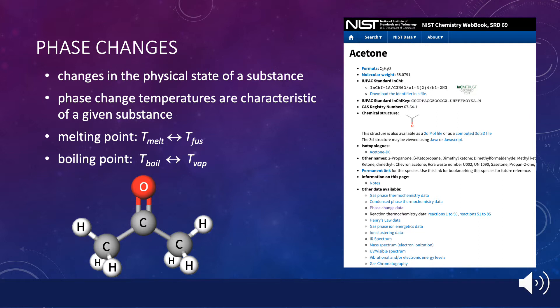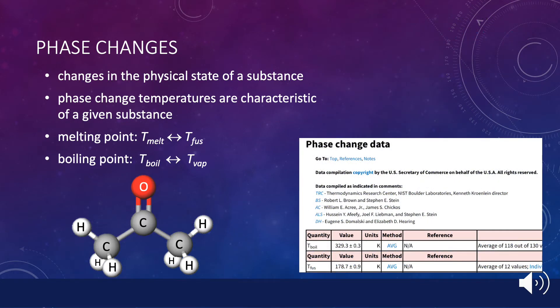For example, if one of your candidates for assignment is recorded as having a melting point at 330 Kelvin and you're told that your sample is actually a liquid at room temperature, which is 298 Kelvin, then you could safely eliminate that candidate from consideration. In the case of acetone, its melting point is 179 Kelvin and its boiling point is 329 Kelvin. So at room temperature, it would be a liquid.